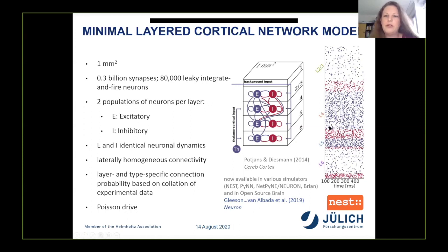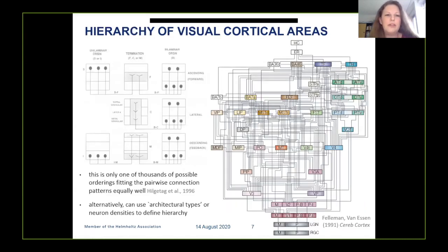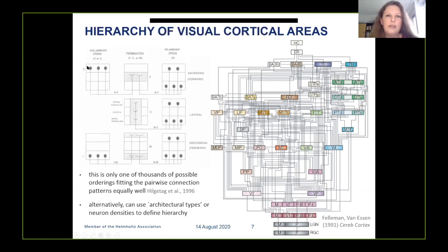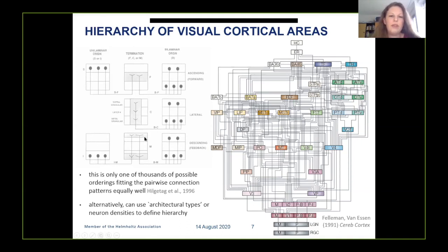This isolated microcircuit model produces asynchronous irregular spiking activity, with layer and population firing rates matching experiments. Coming back to visual hierarchies, depending on their relative hierarchical positions, vision-related areas have different laminar connection patterns. Feedforward projections originate mainly in supragranular layers two and three and terminate mainly in layer four. Feedback projections originate mainly in infragranular layers and terminate outside layer four. One can then define a hierarchy as consistent as possible with all pairwise connection patterns.